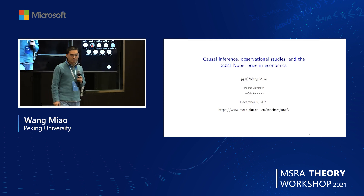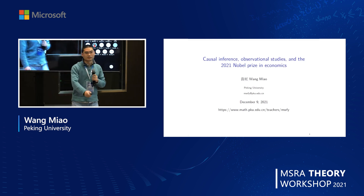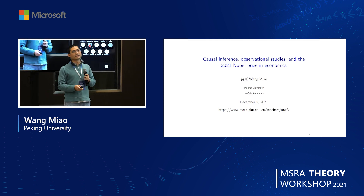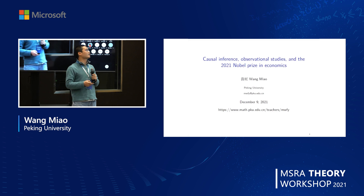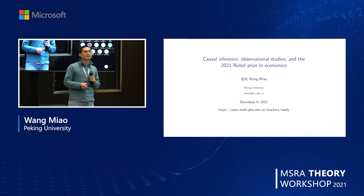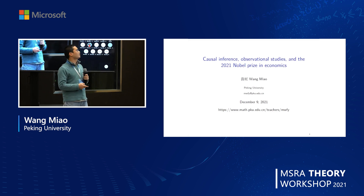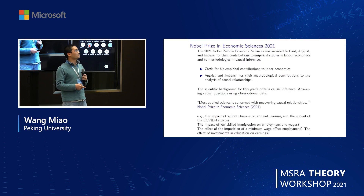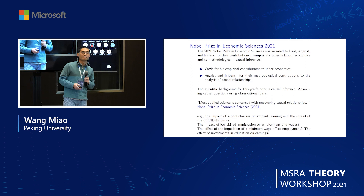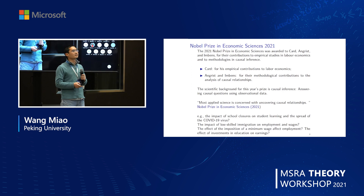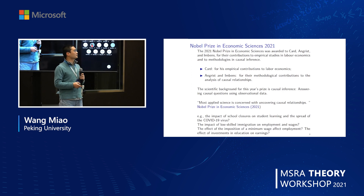This year's Nobel Prize in Economics was awarded to three economists, Card, Angrist, and Imbens, for their contribution to empirical study in labor economics and to methodology in causal inference.